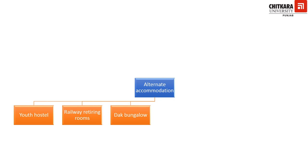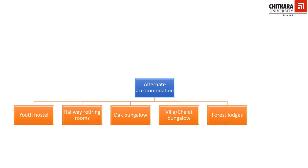Dak bungalows are a legacy of the British Raj — they were rest houses built for the colonial officials. These properties have an ageless charm and are now converted into lodges providing boarding and lodging for travellers. Villa or chalet bungalows are a kind of bungalow with multiple rooms — villa is an Italian concept and chalet is a Swiss concept of the same category. These are now converted into small lodging properties providing comfortable boarding and lodging. Forest lodges are accommodation built according to the principles of ecotourism in forest areas, such as national parks, and come in handy for visitors.